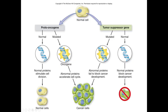One oncogene is enough to cause a problem — it's like putting your foot on the gas. But for tumor suppressor genes to combine to make a problem, you have to have both copies mutated, because you have two copies of every gene. It's like having redundant brakes — if one is a problem, the other can compensate. But when both are mutated, that combined effect is what causes cancer. This is a possible quiz question: oncogenes and mutated tumor suppressor genes are what lead to the genetic causes of cancer.